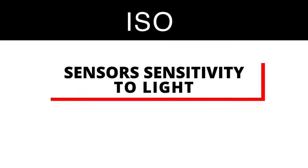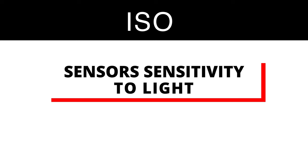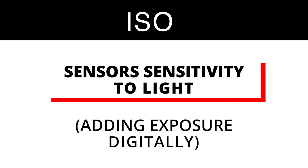And finally, for the last point of the exposure triangle, there is ISO. Unlike aperture and shutter speed, which control the physical mechanics of your camera, all the work ISO does is digital. In photography, ISO stands for International Organization for Standardization, which is a mouthful — but don't worry about memorizing it. What you need to know is it refers to the sensitivity of the camera's image sensor to light, which is basically a long way of saying it's adding exposure to your photo digitally.